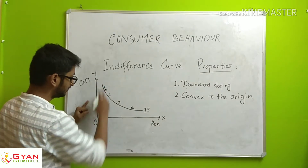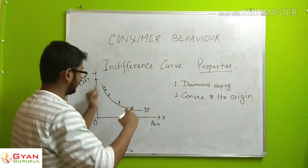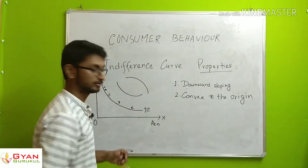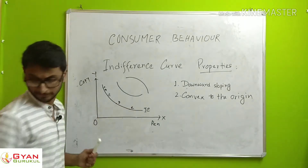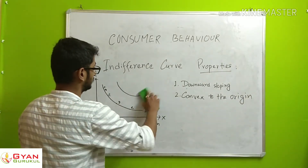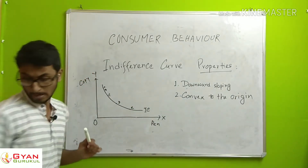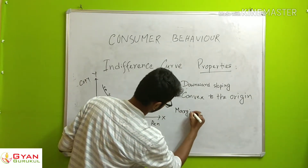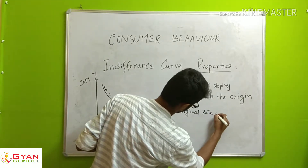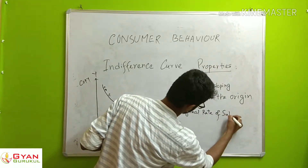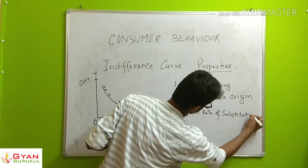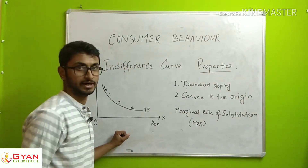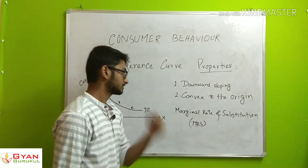Second property: the indifference curve is convex to the origin. This convex shape is related to the marginal rate of substitution — MRS.